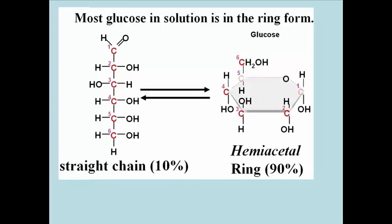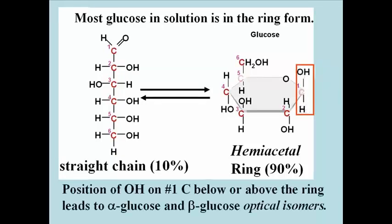Here is the number 5 and number 1 carbon involved in forming that hemiacetal. A consequence of hemiacetal formation is that the hydroxide on the number 1 carbon can end up either above or below the plane of the ring. I've got that backwards, but you get the idea.